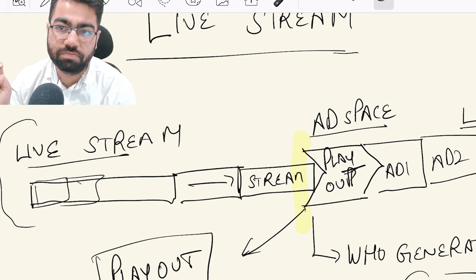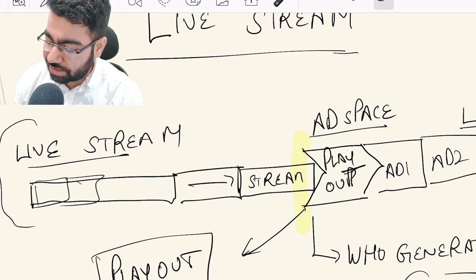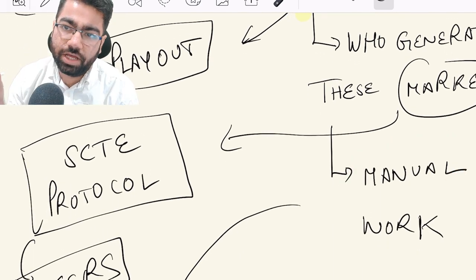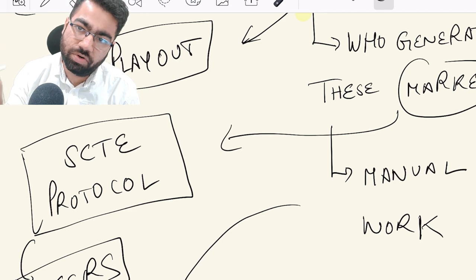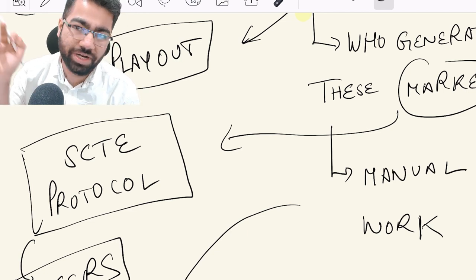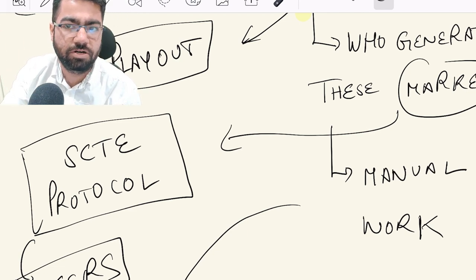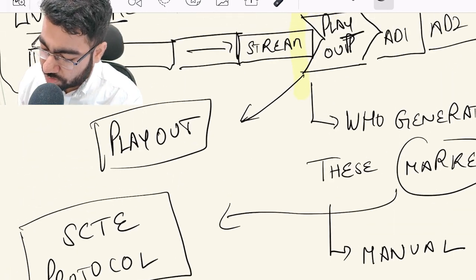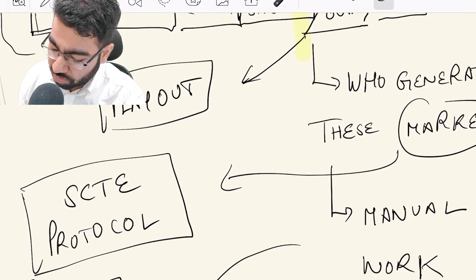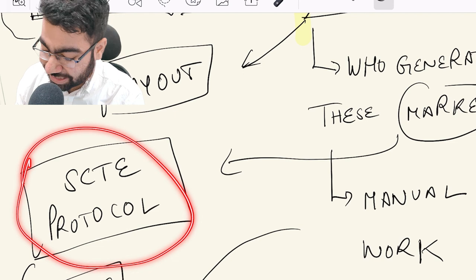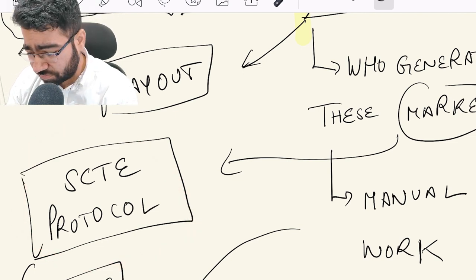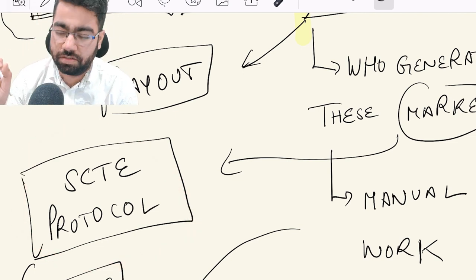Now who inserts these markers? These markers are actually inserted manually. There are editors sitting while the match is going on who decide when a break has to be taken and insert the markers in the live stream that is being produced. These markers are generated through the SCTE protocol and are called SCTE markers.